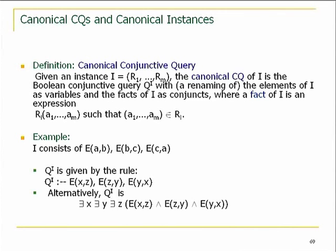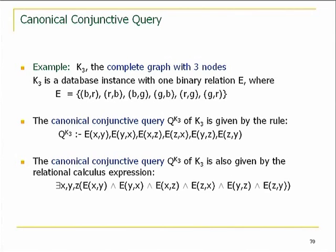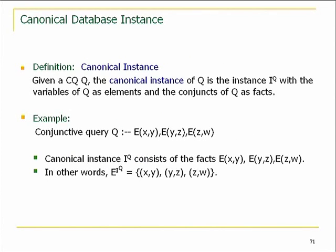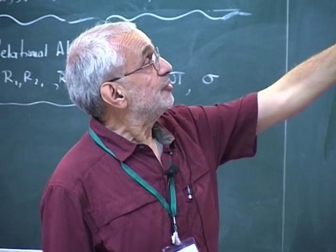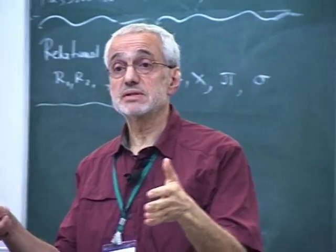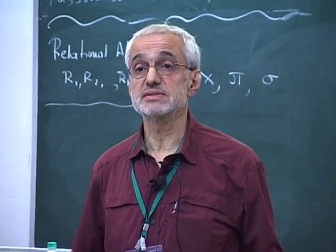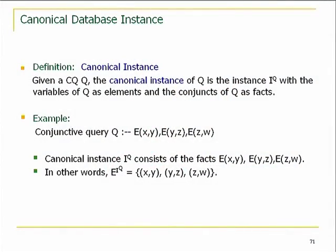We can also go in reverse: start with a conjunctive query and view it as a database by treating the variables as elements of the active domain and populating the database with the conjuncts of the query. So I want you to think: whenever you see a database, think of a conjunctive query; whenever you see a conjunctive query, think of a database. This is the canonical instance of the query.